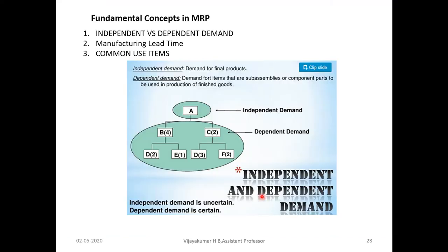With MRP, there is less scrap and rework and high production quality. There are some fundamental concepts in material requirement planning: independent demand, dependent demand, manufacturing lead time, and common use items. Independent demand is the final product; dependent demand is the sub-assemblies and components used in the final product. In a product structure tree, the final product uses sub-assemblies B, C, D, E, and F which are the dependent demand components.